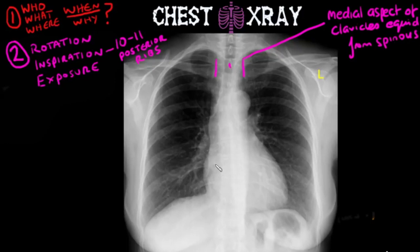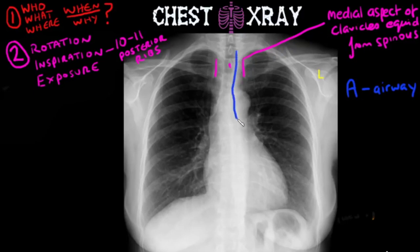Then you are going to adopt an ABCDE approach to interpreting chest X-rays. A obviously stands for airways, so we are talking about the trachea and its branches, the bronchi, and any airways you can see distal to that. You are going to trace it, look down either side, and look in both lung fields as well.